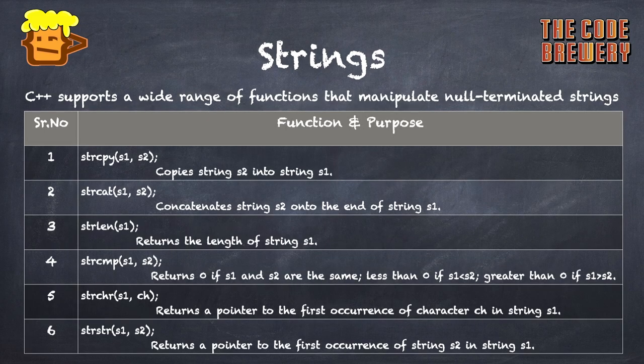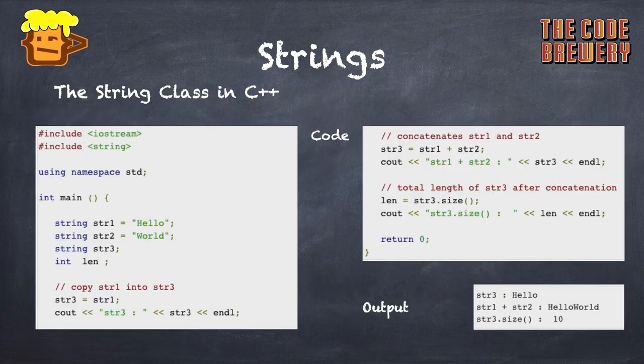C++ supports a wide range of functions that manipulate null-terminated strings. strcpy copies string s2 into string s1. strcat concatenates string s2 onto the end of string s1, that means if there is a string s1 then the string s2 will get added at the end. strlen s1 gives the length of the string s1, and so on and so forth.